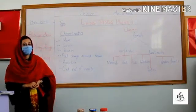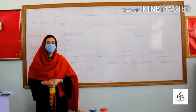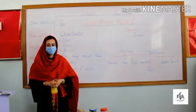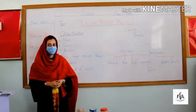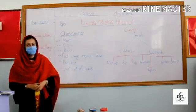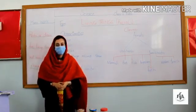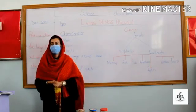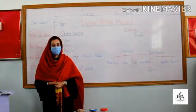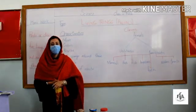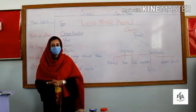I hope all of you are doing well. This is the first topic of class 3, subject science. Today we will discuss about living things. You know that we have so many things around us — some of them are living things and some of them are non-living things. So how can we differentiate between living things and non-living things?